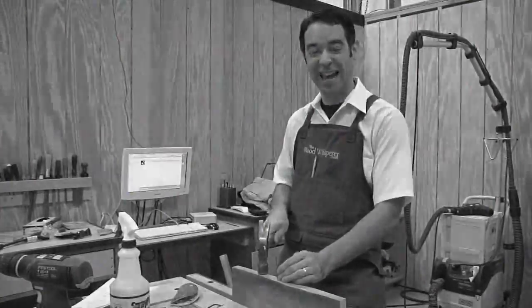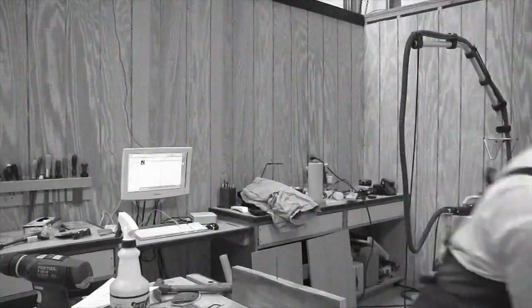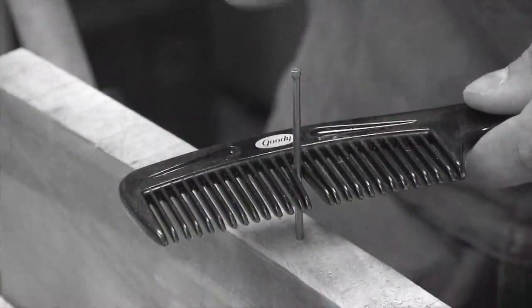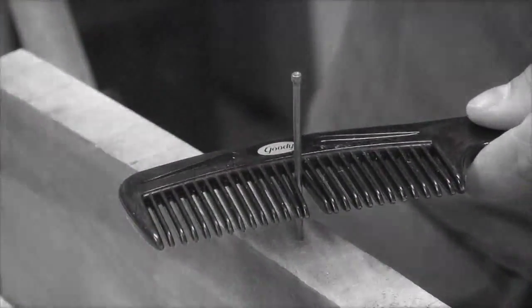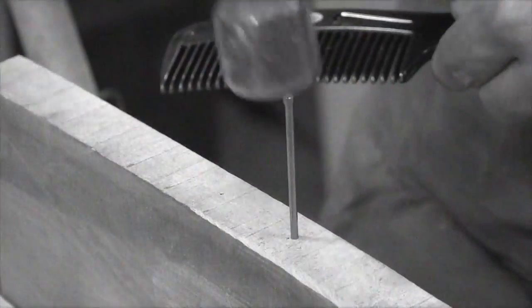Nobody likes sore thumbs from hammering small nails. Youch! So why not use a comb to hold the nail in place with your hands safely out of the way. When the nail is started, remove the comb and continue nailing. When you're done, you can make sure your hair still looks as good as it did when you greased it up this morning.